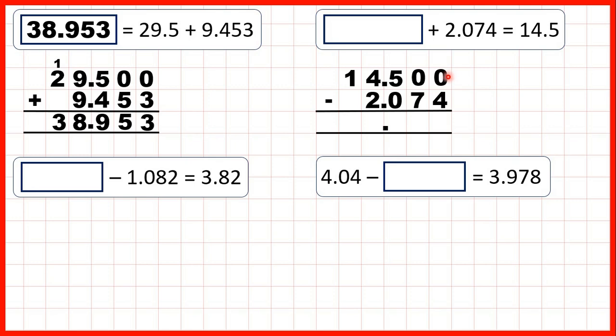Now we can't do 0 minus 4, and if we go to the left, we have a 0. So we go all the way over to our tenths column. 1 less, 1 in front, and then again, 1 less, 1 in front. Now 10 minus 4 is 6, 9 minus 7 is 2, 4 minus 0 is 4, 4 minus 2 is 2, and 1 minus nothing is 1. So our missing number is 12.426.